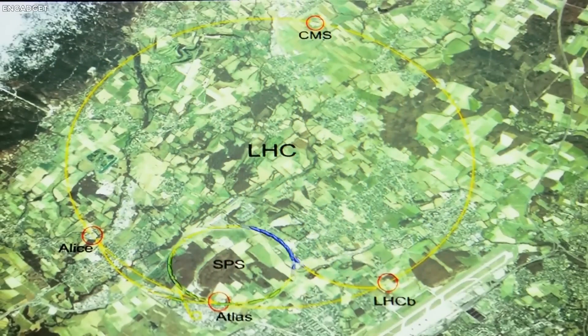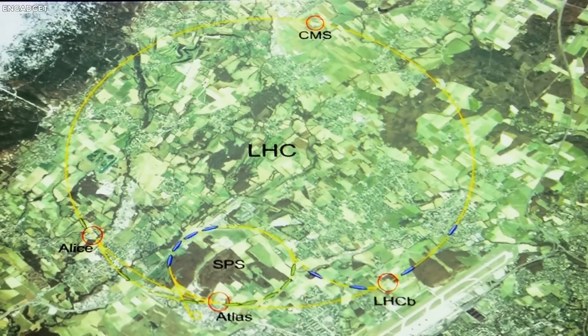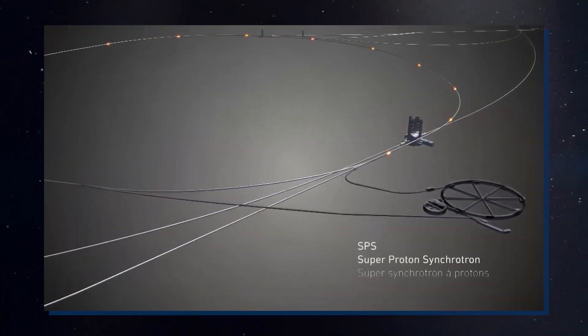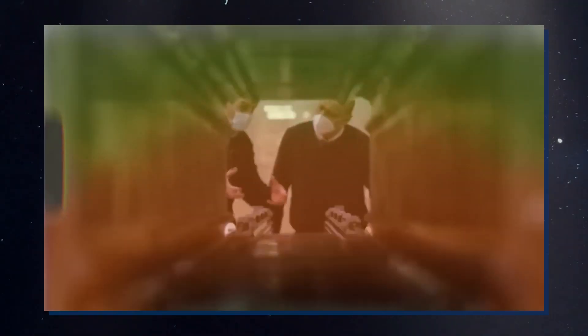Intriguingly, this magnetic anomaly coincided with the LHC's increased energy output. This led to a surge of speculation linking the two events, suggesting that the high-energy collisions within the LHC may have somehow influenced Earth's magnetic field.